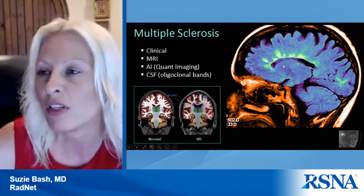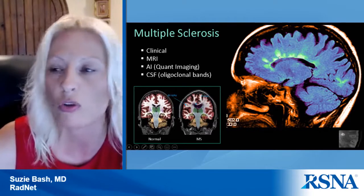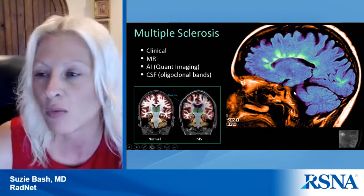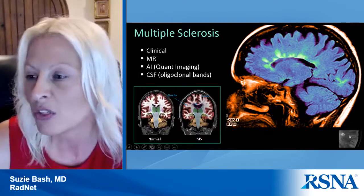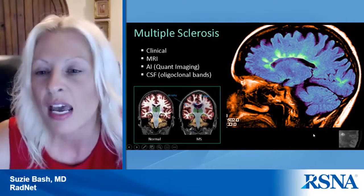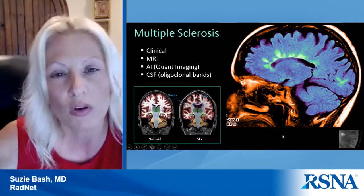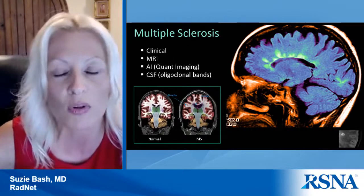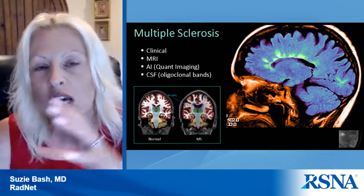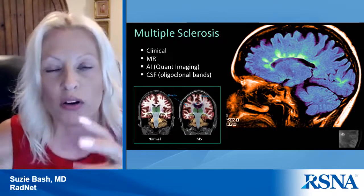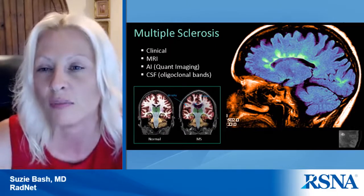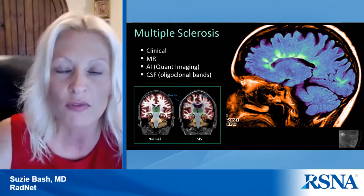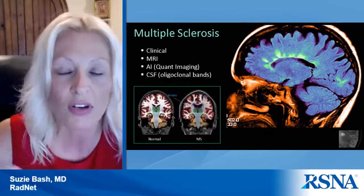MRI often has a very characteristic appearance — Dawson's fingers, callosal/pericalosal lesions, lesions along the optic radiation and in the brainstem — and we can get that central vein sign. MRI often lets us nail this diagnosis, and as soon as we open the scan we can often detect multiple sclerosis. What I find very useful in my clinical practice is quantitative volumetric imaging as an adjunct to MRI. If there does remain clinical ambiguity, CSF analysis for oligoclonal bands can also be obtained.